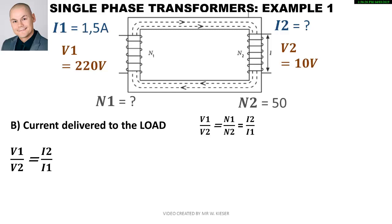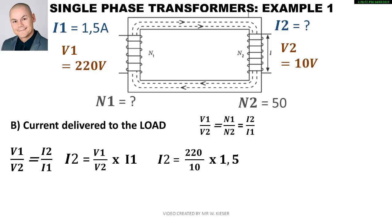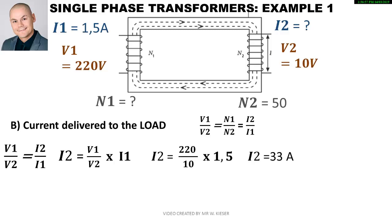To calculate I2, the current delivered to the load, we still use the voltage as our known factors to minimize mistakes. Remember I2 is on top, so V1 and V2 remain the same position. We multiply by the primary current: 220 divided by 10, multiplied by 1.5, gives us a secondary current of 33 amps.